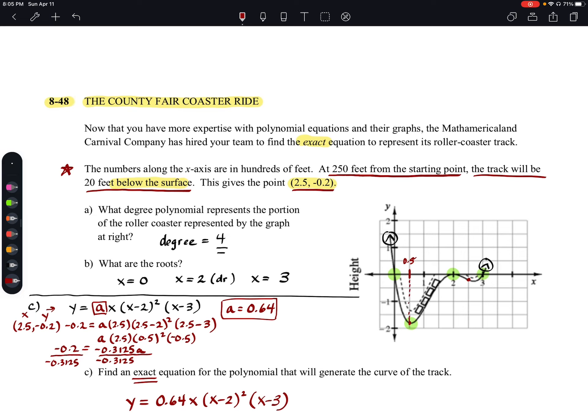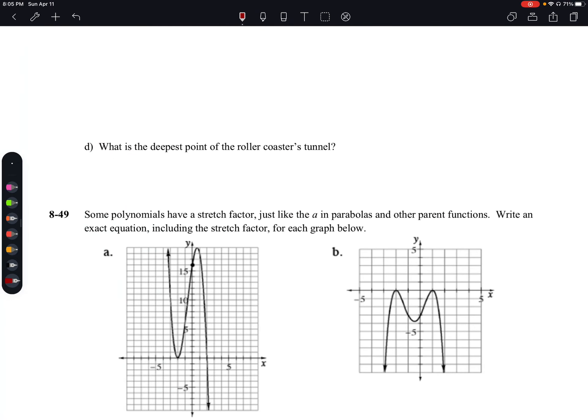What we're going to do is we can take it and plug in 0.5 into that function. So we'll say like f(0.5) should equal our 0.64 times, we said x, which will now be 0.5, times our (0.5 - 2) squared times our (0.5 - 3).